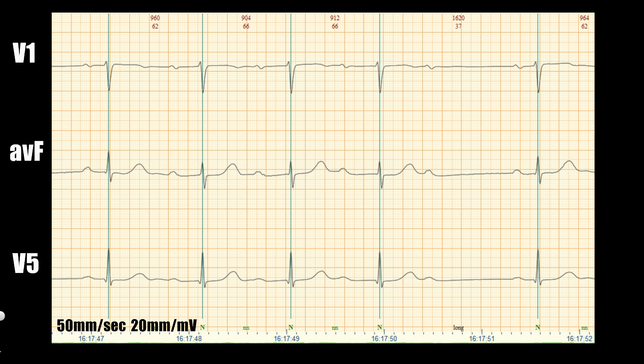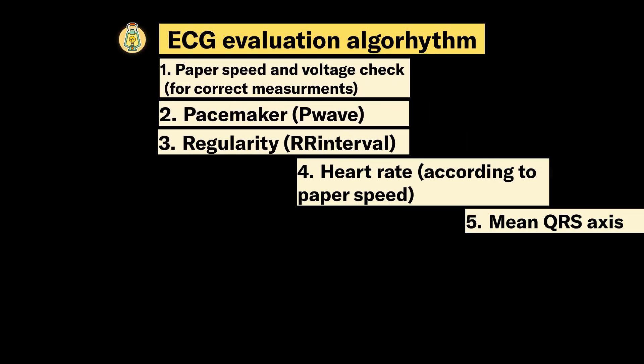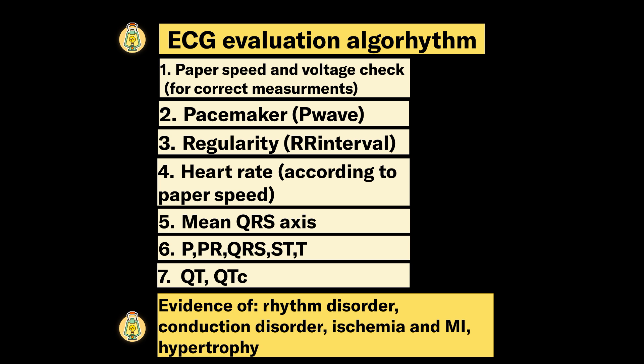Today we describe the ECG with 2nd degree AV block type 1, or Mobitz 1. For proper evaluation of this or any other ECG, we will use an algorithm — showing not just the ECG criteria, but also the approach to checking any ECG and avoiding mistakes.